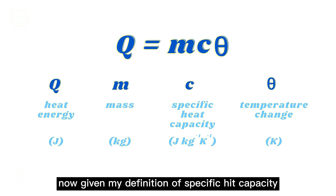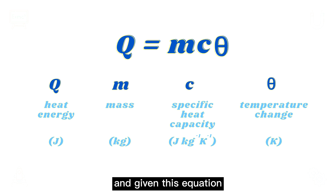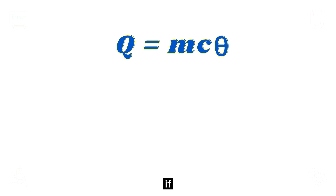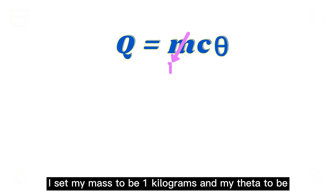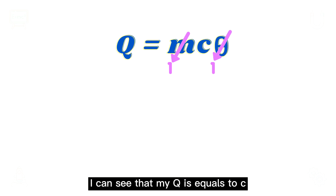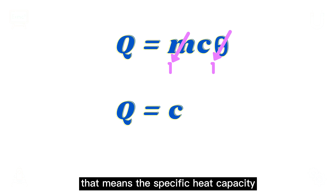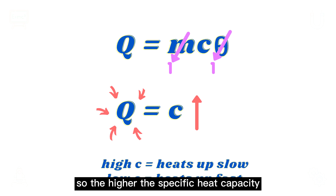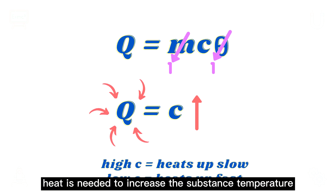Given the definition of specific heat capacity and given this equation, if I set my mass to be 1 kg and my theta to be 1 degree difference, I can see that my Q is equal to C. That means the specific heat capacity is the amount of heat required. So the higher the specific heat capacity, the more heat is needed to increase the substance's temperature.